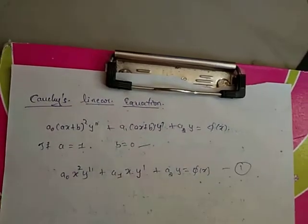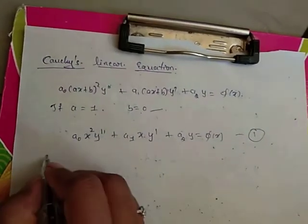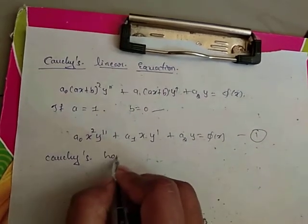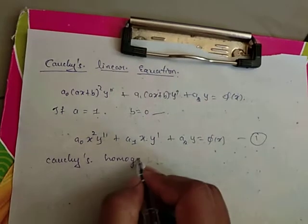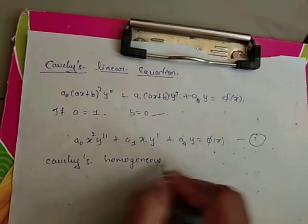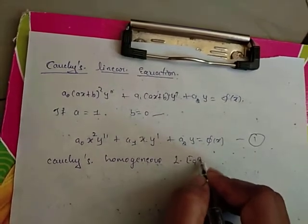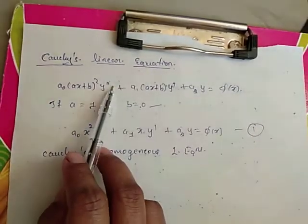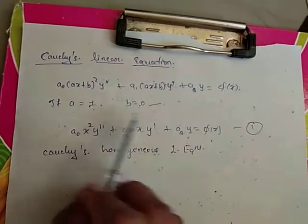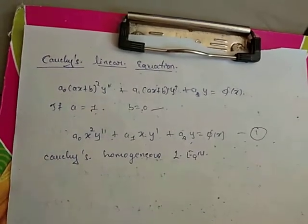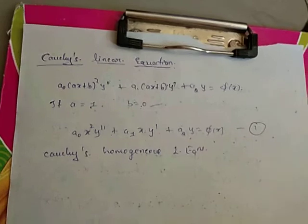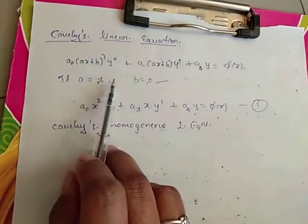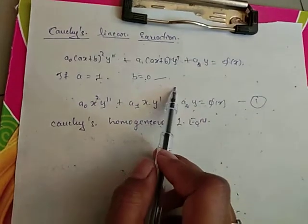This equation is called the Cauchy's homogeneous linear equation. In this particular case, we declare the Legendre's equation as Cauchy's linear equation. So, Legendre's linear equation is converted to Cauchy's equation under the condition A = 1 and B = 0.